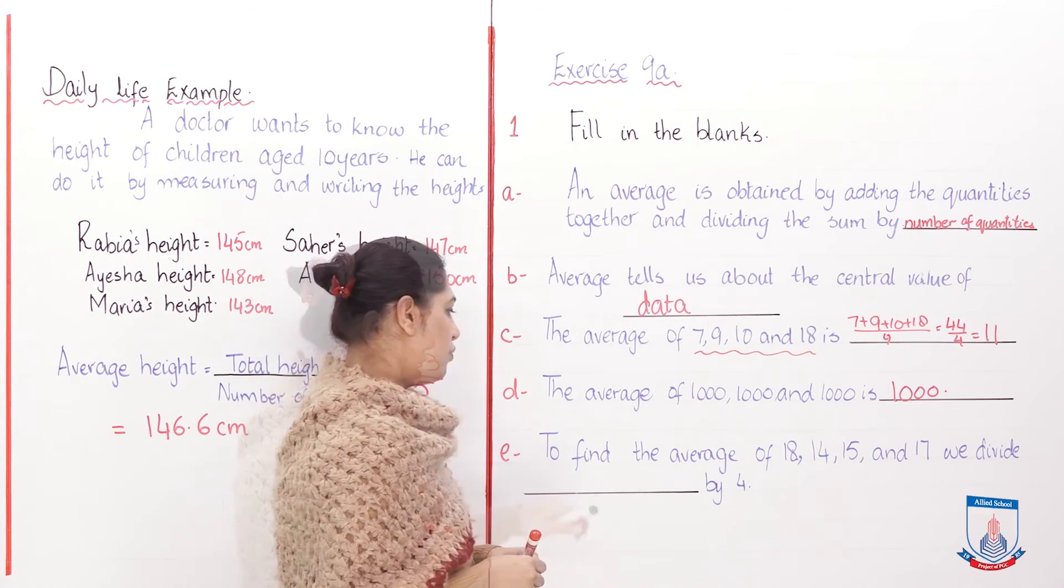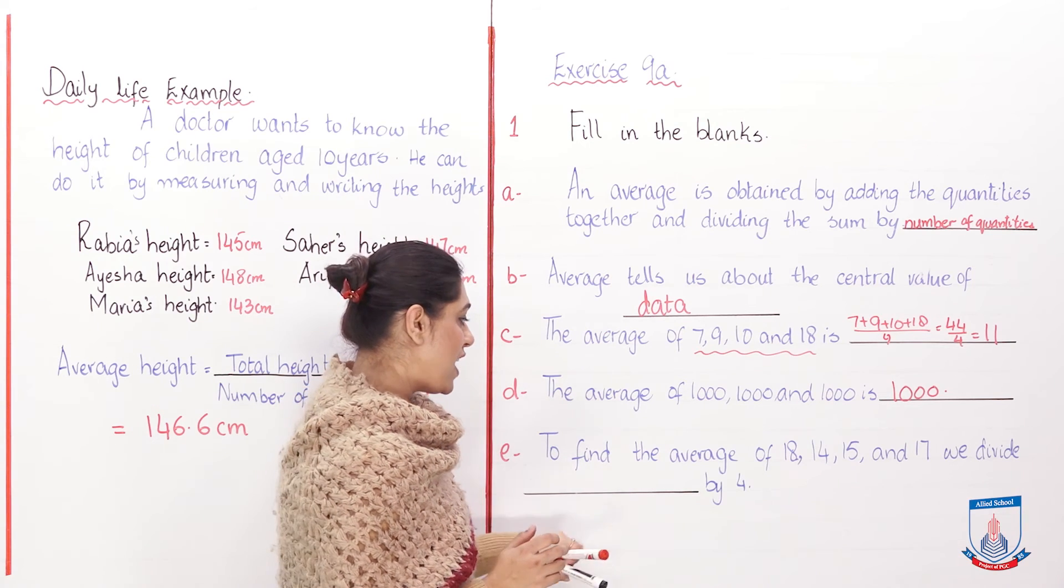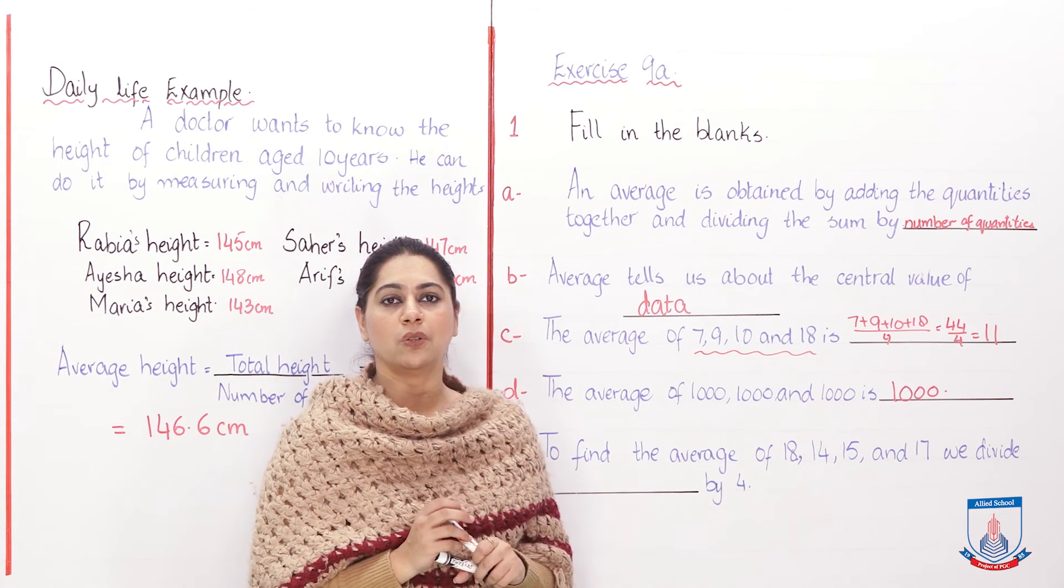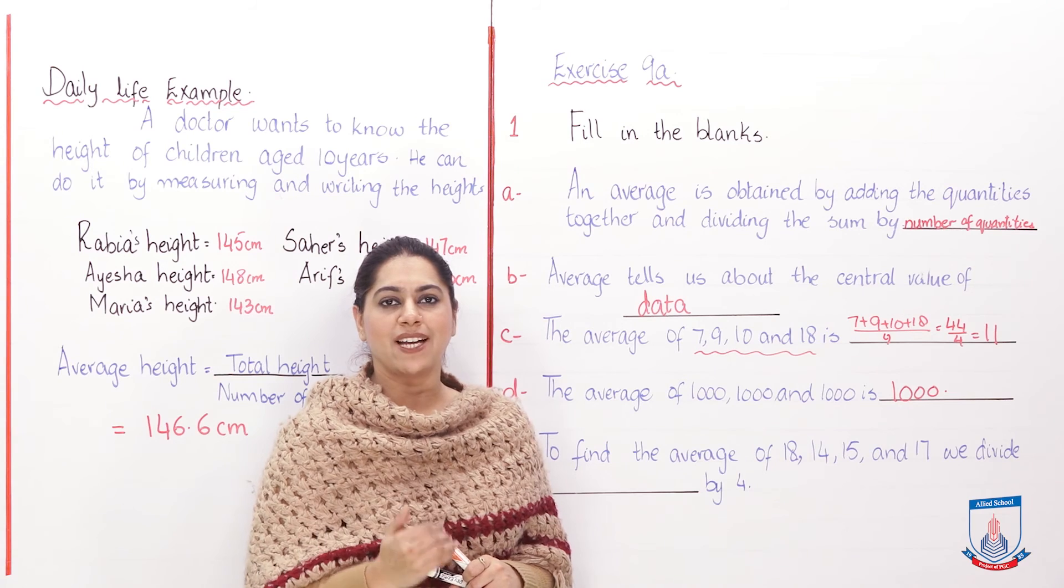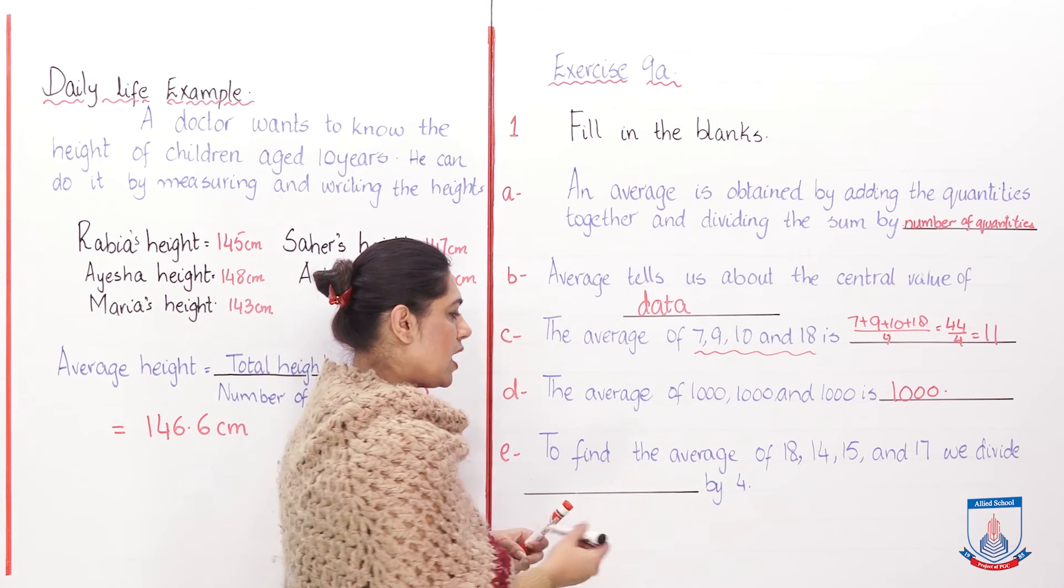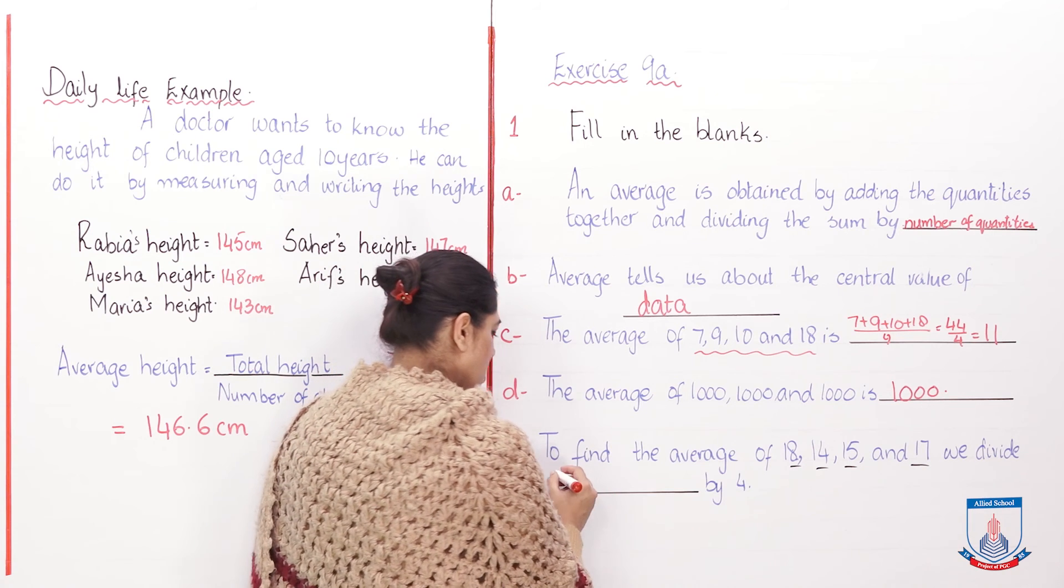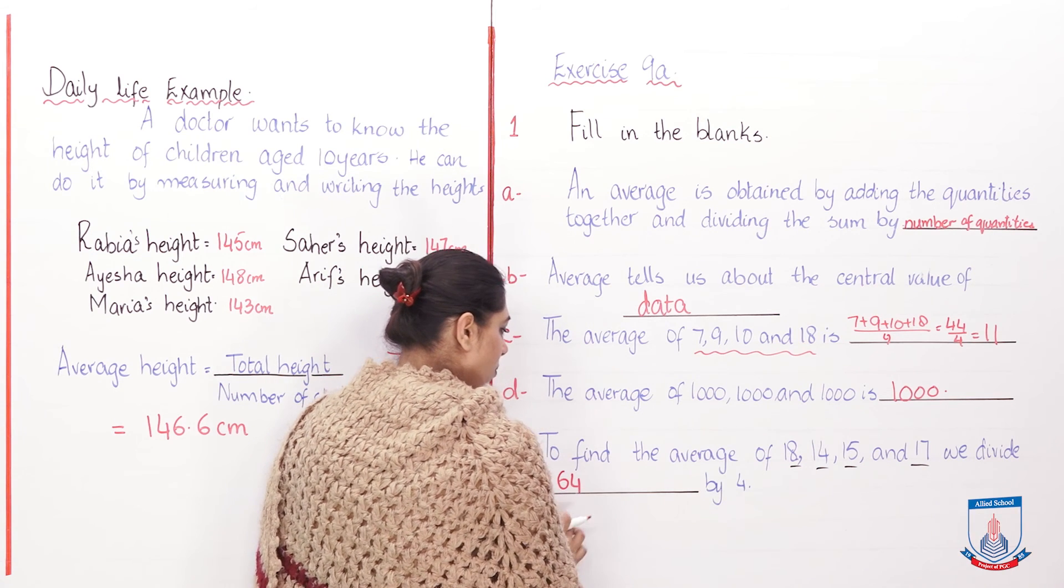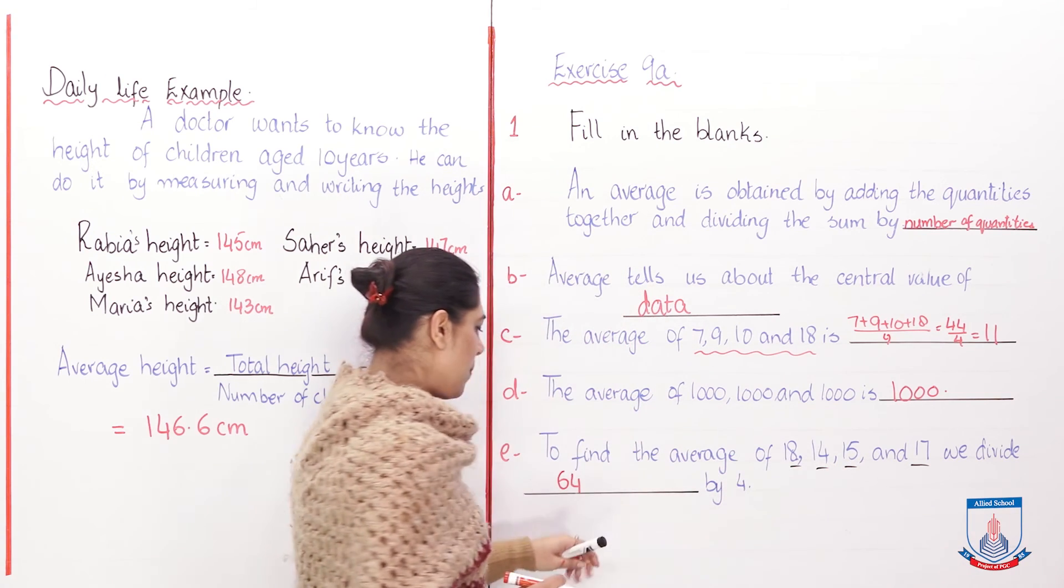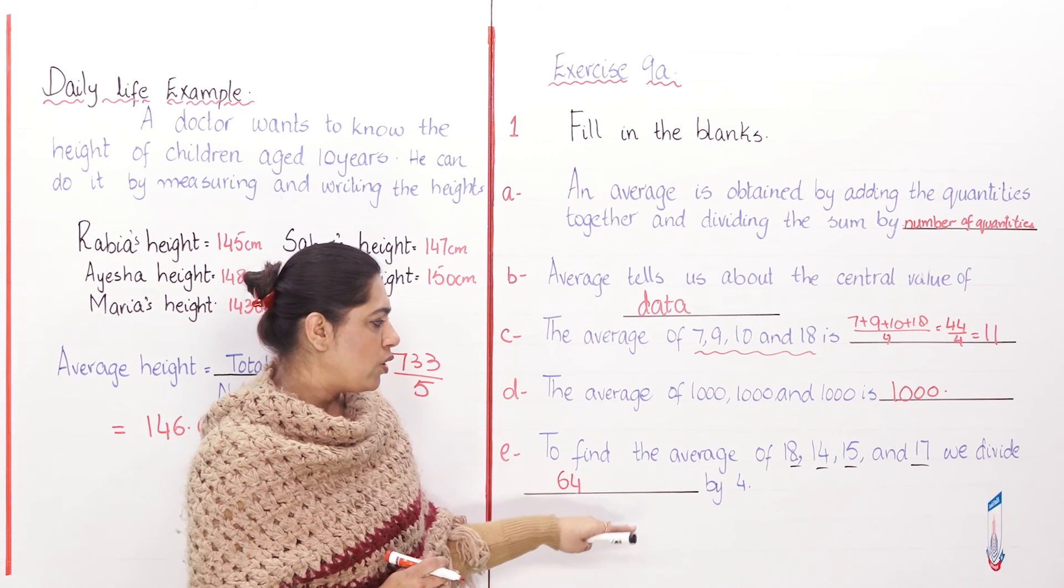The last part is: to find the average of 18, 14, 15, and 17, we divide blank by 4. Exactly, in this we have to put the average formula. What is the average formula? Sum of the numbers divided by the quantity. Now he has asked us to find out the average. What will we do? We will sum all these. Now we will add, you are going to get 64. So 64 we will divide by 4. How many quantities? 1, 2, 3, 4. So here we actually had to make the sum of these numbers, which we have done. You can also do it in your rough work.